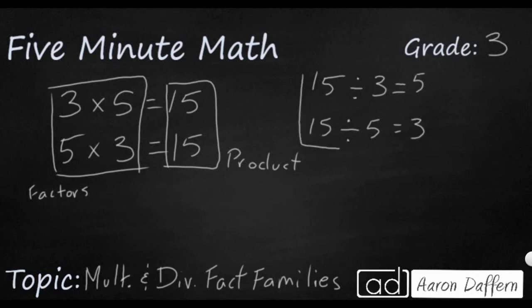So in our fact family for 15, 3, and 5, the division side, we actually have three different names we need to remember. The biggest number, which was our product in the multiplication facts, this is called the dividend. So that's what you're dividing into.